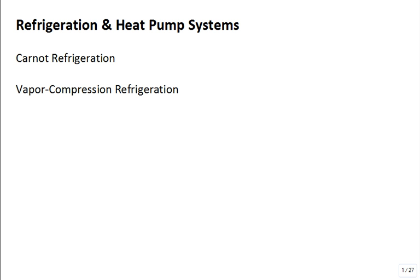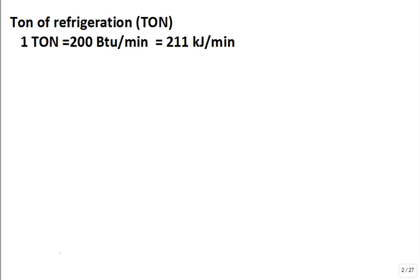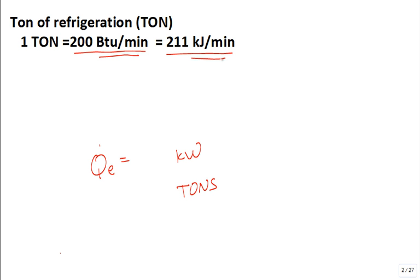This is our second lecture in refrigeration and heat pump systems. Last time we spent a lot of time on the Carnot refrigeration, and we need to move into the vapor compression refrigeration. The rate of cooling, Q_E, should be calculated both in kilowatts and in tons of refrigeration. A ton of refrigeration is a rate of heat removal: 200 BTUs per minute or 211 kilojoules per minute. That's how air conditioning units are often rated—how much heat they can remove in tons.